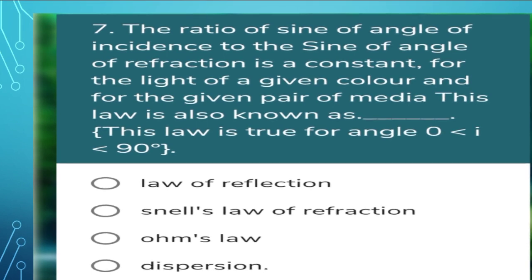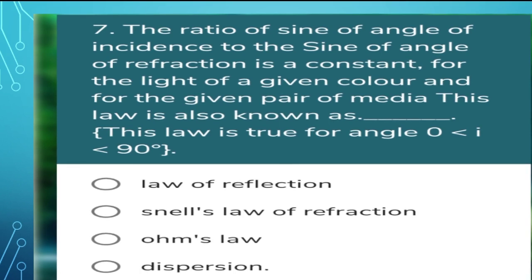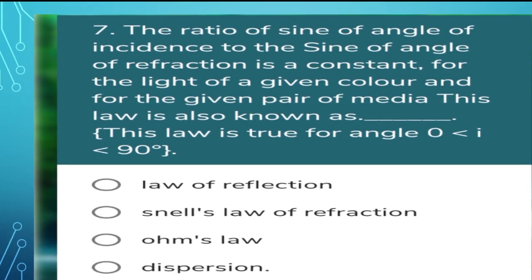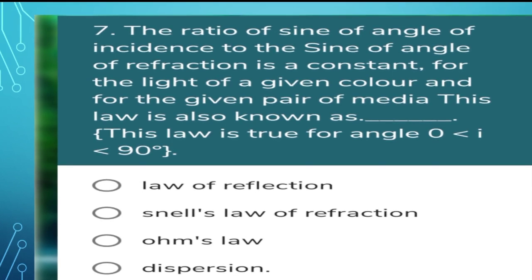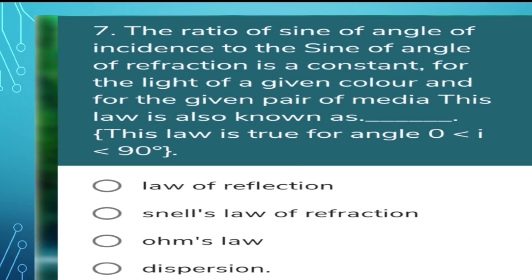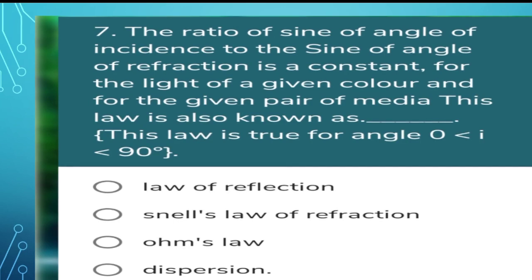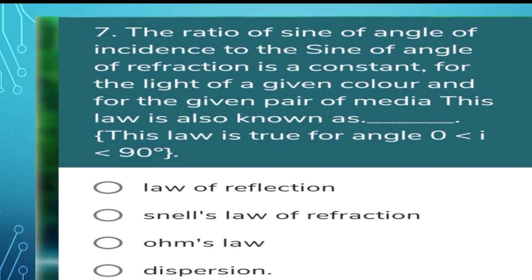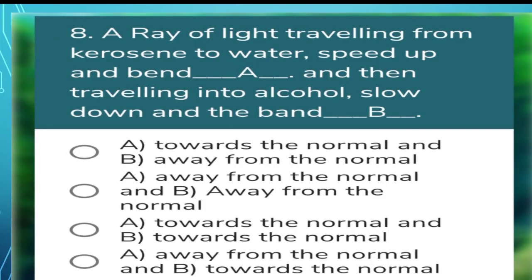Next question: the ratio of sine of the angle of incidence to the sine of the angle of refraction is constant — this law is also known as? This is the second law of refraction of light, also called Snell's law of refraction. So the second option is correct.